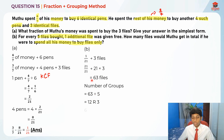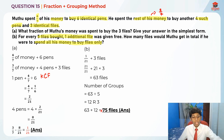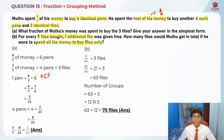So we take 63 plus 12, which gives us 75 files. Muthu would get 75 files in total if he were to spend all his money on files only. With that, I've come to the end of question 15. I hope you understood my explanation on fractions and the grouping method. Thank you and bye-bye — I'll see you in my next video!